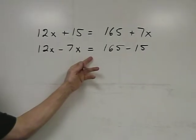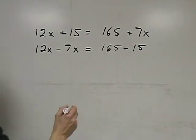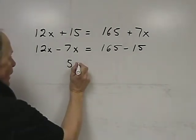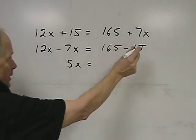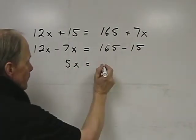Okay, so let's solve this a little bit more. 12x minus 7x is going to give us 5x. 165 minus 15, 150.